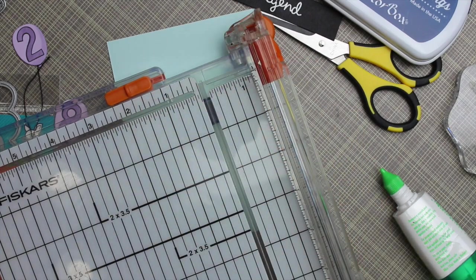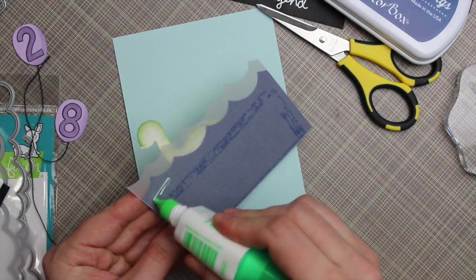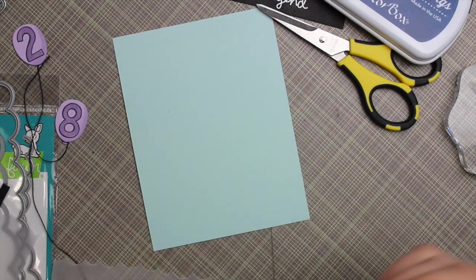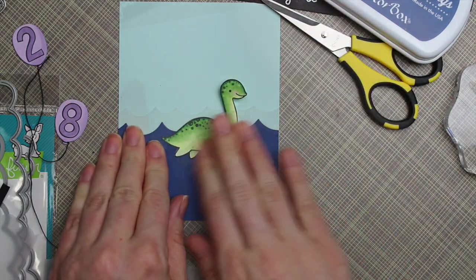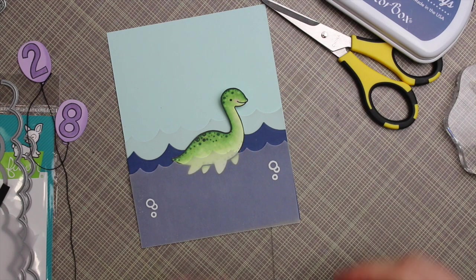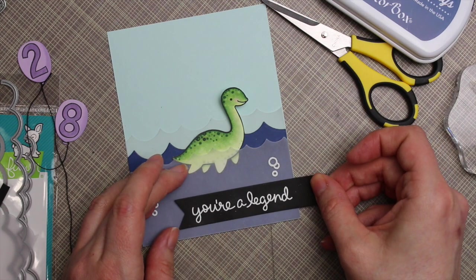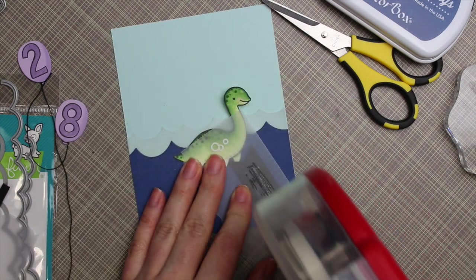And then to adhere the front part of vellum, since adhesive usually shows through it, I first adhered the back piece and made sure not to apply any adhesive along the top there. I didn't want the adhesive to show through. And then I adhered the sentiment over the front strip of vellum. And then I was able to flip that over and apply adhesive just behind that.